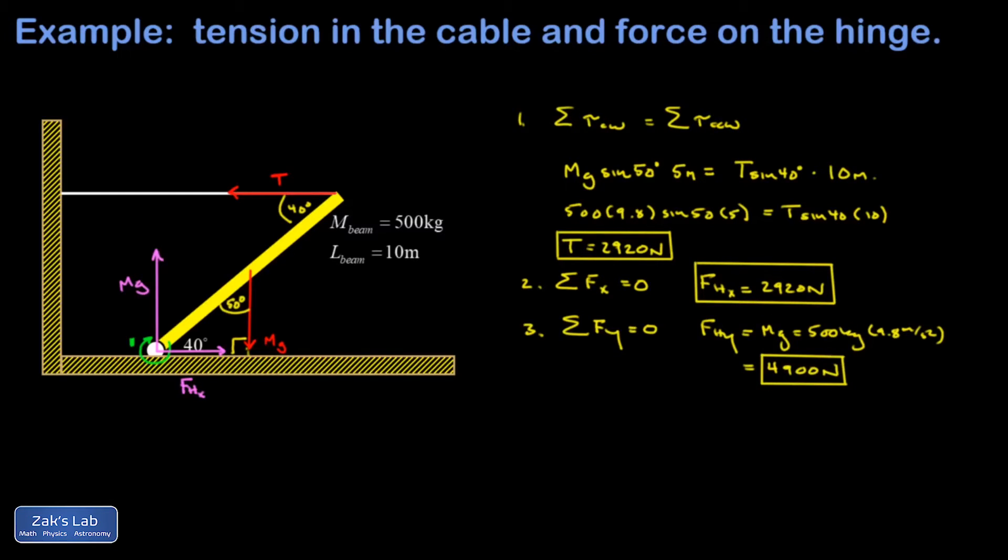Finally, my expectation here was that I wanted the hinge force expressed in polar form. So I want a magnitude and a direction for that. So let's copy down those components. I have an X component of 2,920 newtons. And I have a Y component of 4,900 newtons.